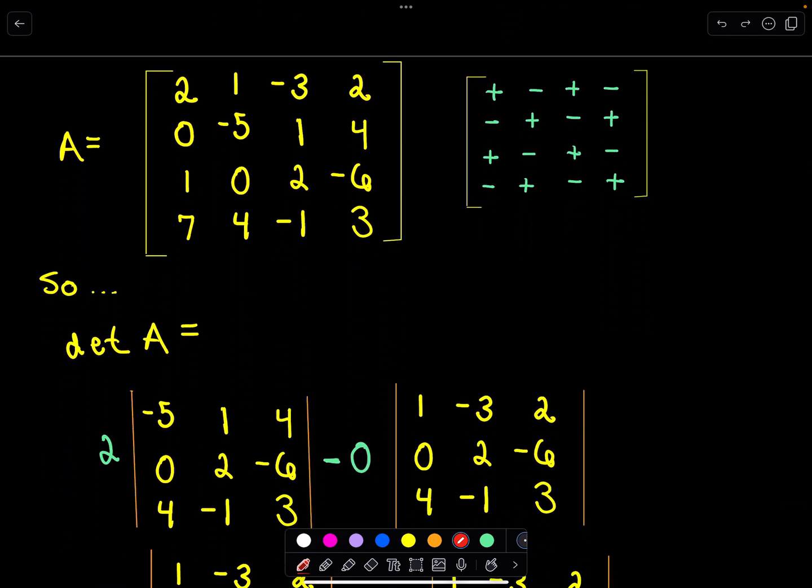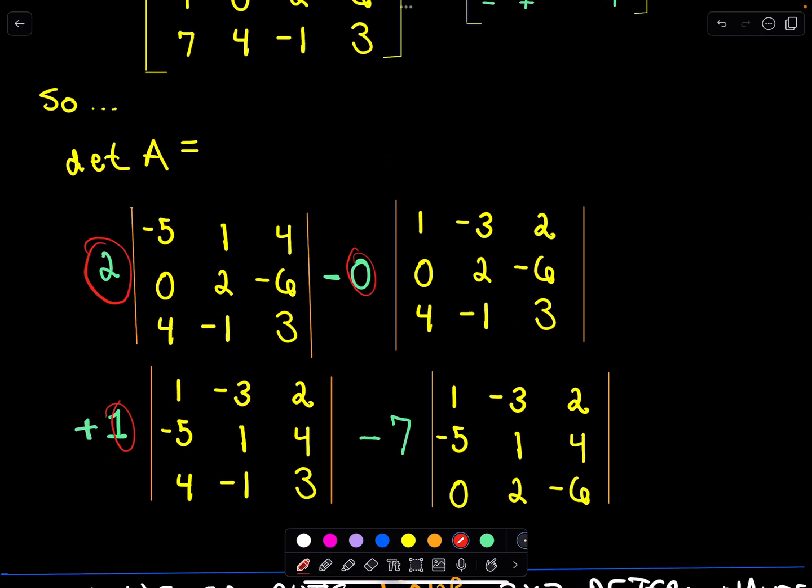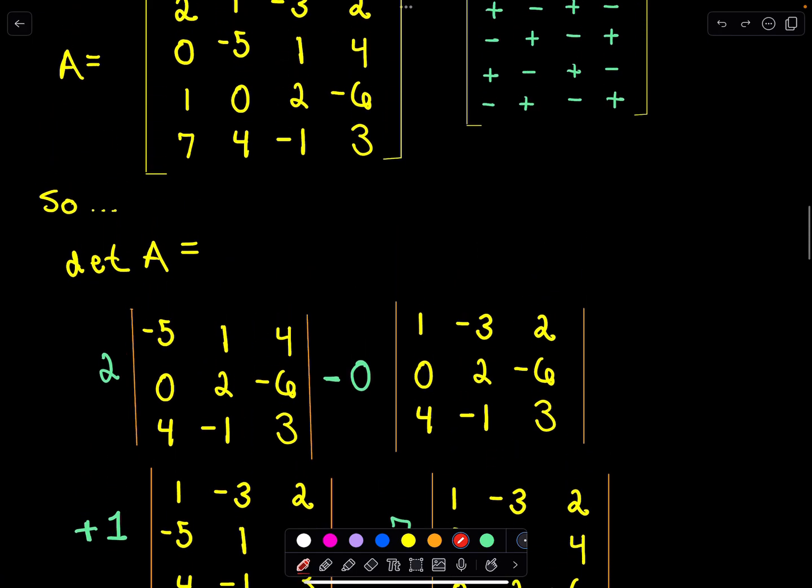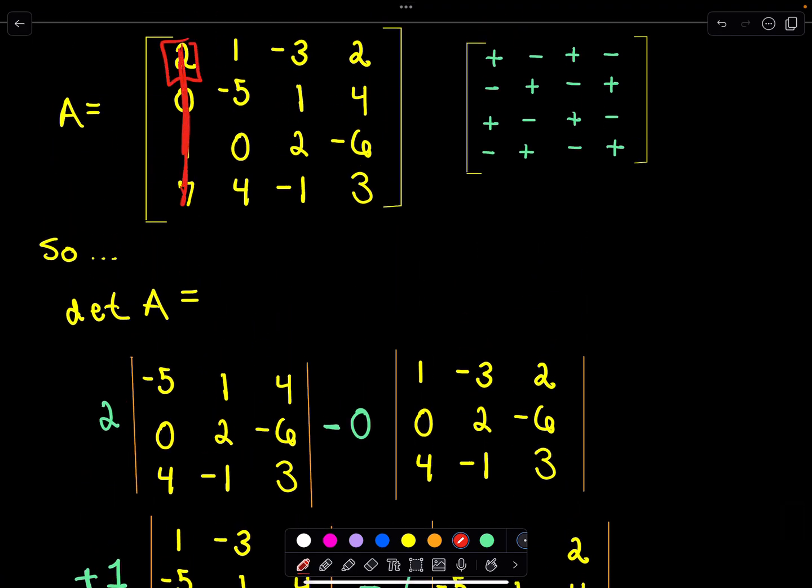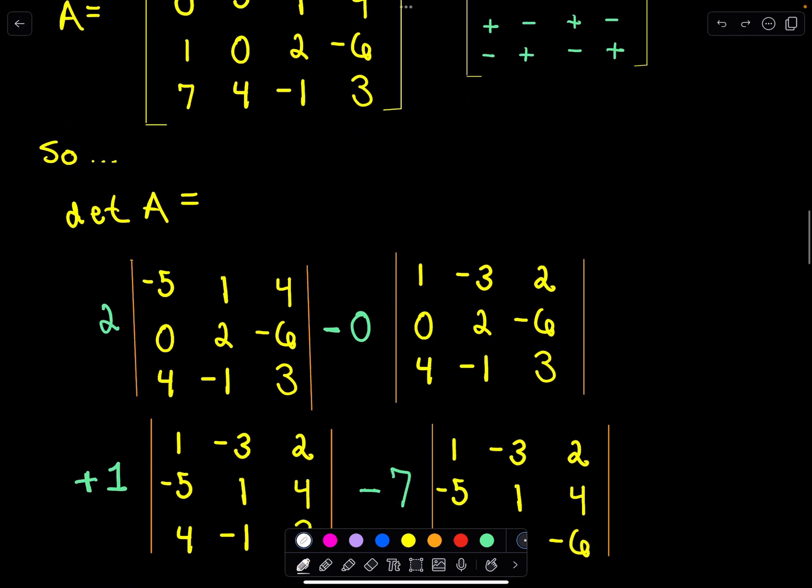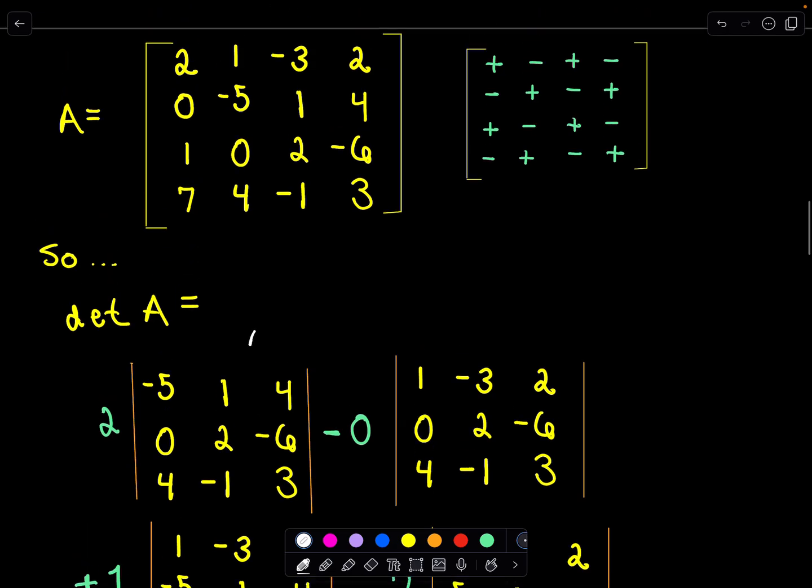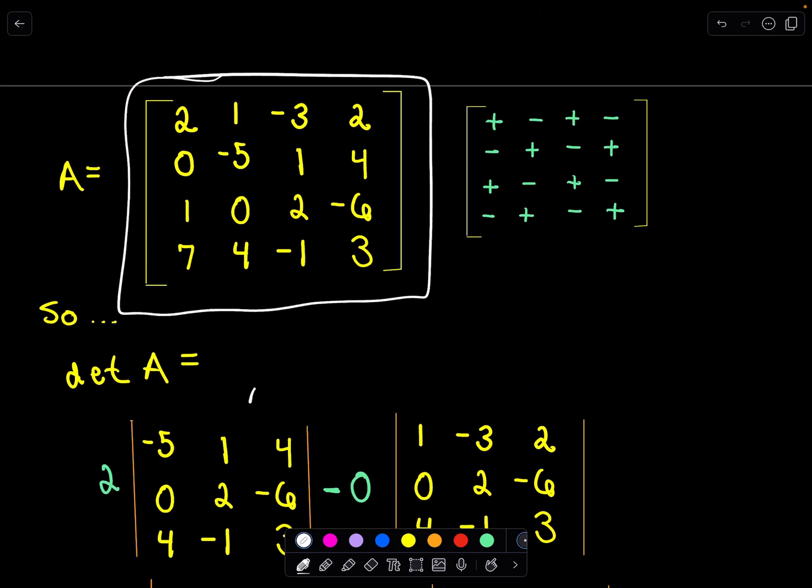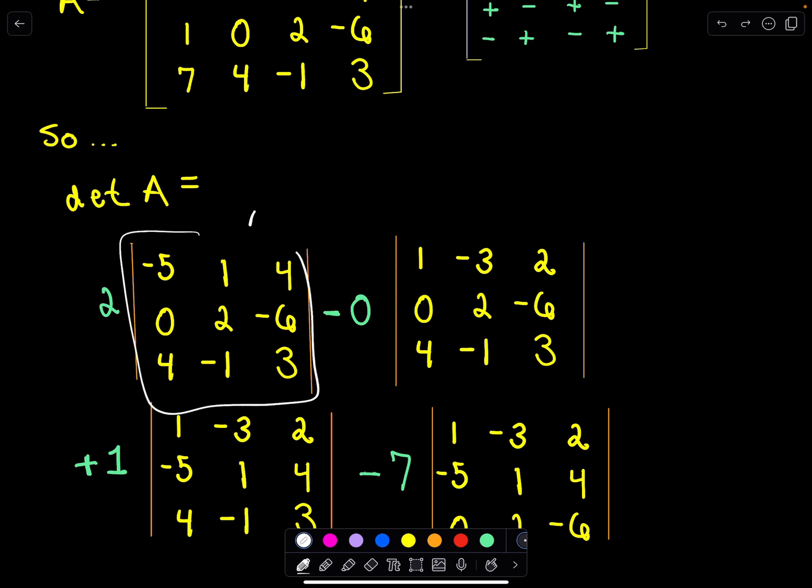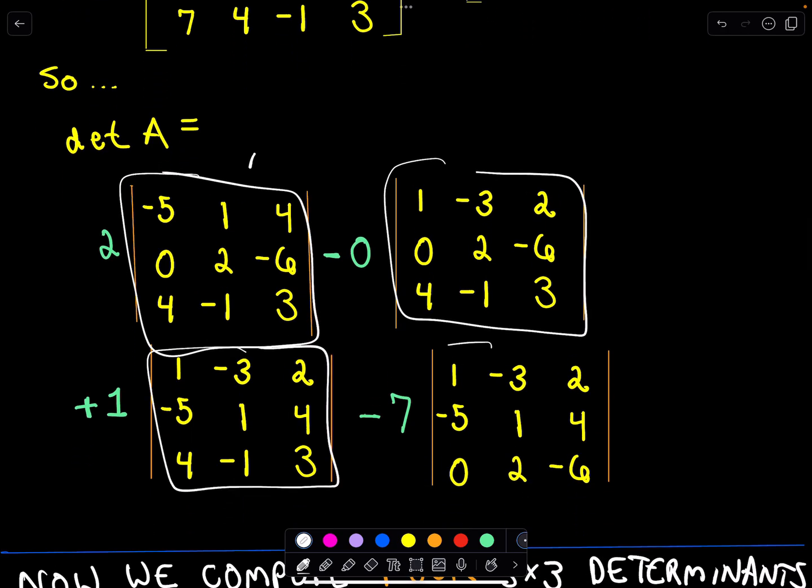I already have it filled in so notice we've got 2, 0, 1, 7. There's my 2, there's my 0, there's my 1, there's my 7. There's my plus minus plus minus. And again, maybe we'll just look at this first determinant. So if I cross out, there's my 2, if I cross out that column and that row, notice again I'm simply left with those values. And we can fill in those other 3x3 determinants the same way. So notice now we went from finding the determinant of a 4x4 matrix. That's what we're really interested in. Well, our formula breaks it down into finding a bunch of 3x3 determinants instead.